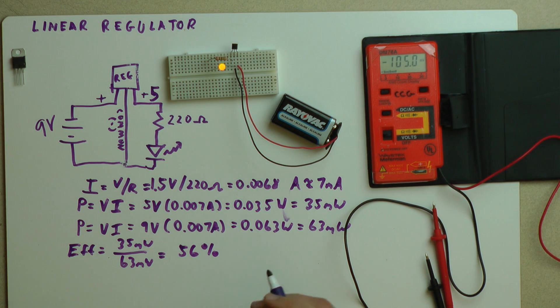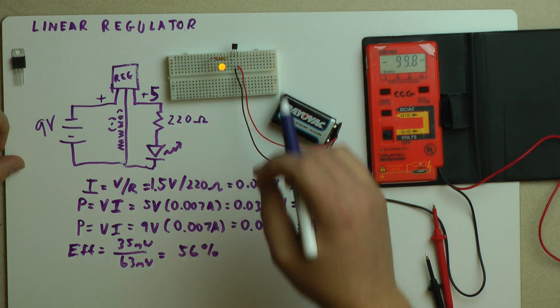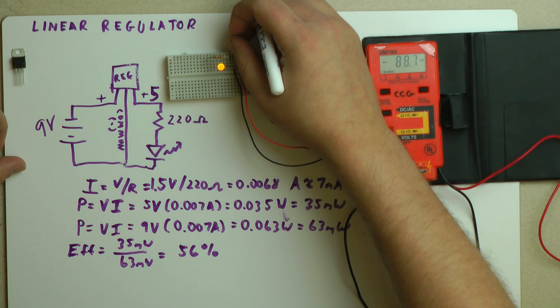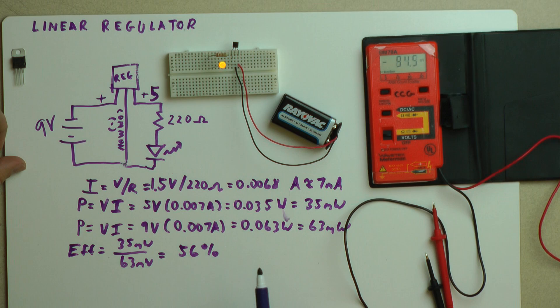Now here's a question. Where's all that extra power going? It turns out it goes to heat. The linear regulator, as a matter of fact, you can barely feel it here, but it's getting slightly warm.